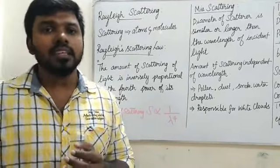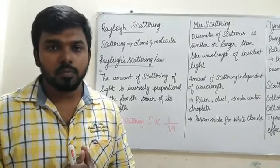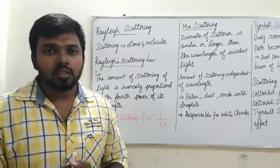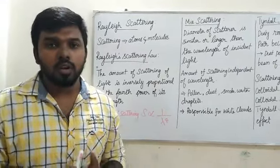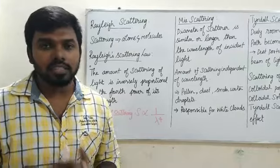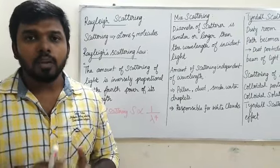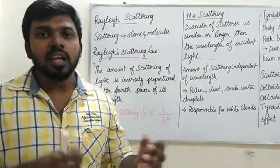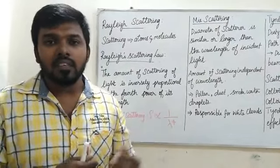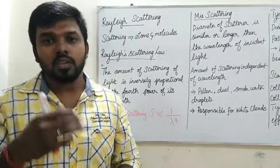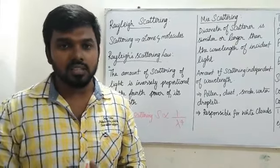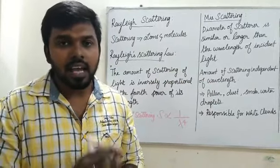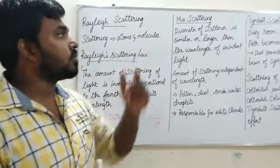This explains why the sky appears blue — because blue color has a shorter wavelength than red color, so it scatters more. During evening and morning, the sky appears red in color because the distance between the earth and the sun's rays is very long. Since red color has the highest wavelength, it travels the long distance and the sky appears red during evening and morning.